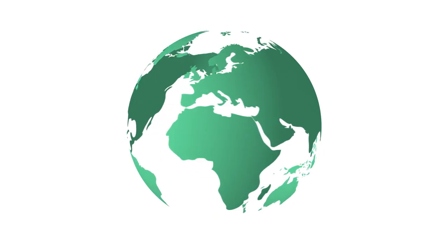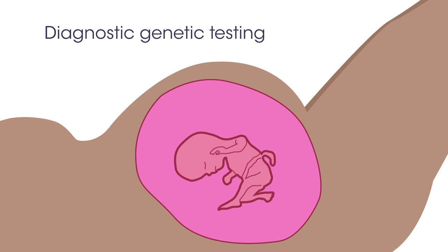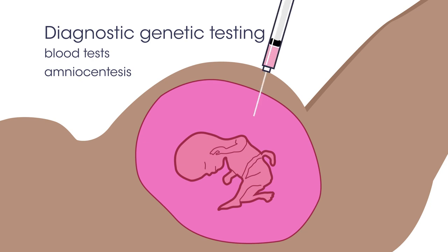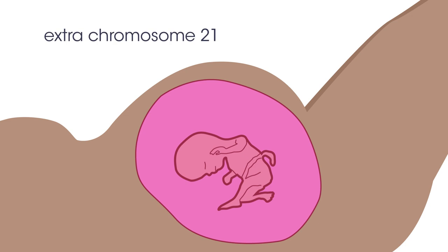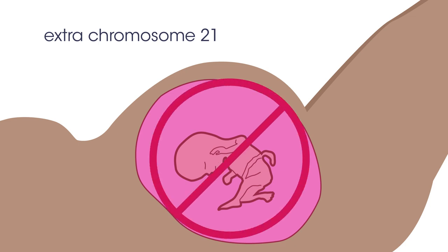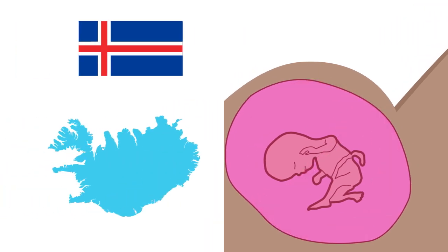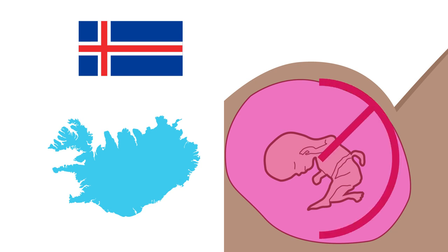In some countries, people who are pregnant are offered diagnostic genetic testing for Down's syndrome. This can be done by blood tests or amniocentesis, which involves taking a sample of the amniotic fluid surrounding the fetus in the uterus and looking at the number of chromosomes in those cells to see if any have the extra chromosome 21. Having the tests may be the choice of the parents and will allow them to be more prepared for a baby with Down's syndrome, or choose to have an abortion. In Iceland, this type of genetic screening is widespread and people are counseled when they have the test — most choose abortion, meaning almost nobody is born with Down's syndrome in Iceland.